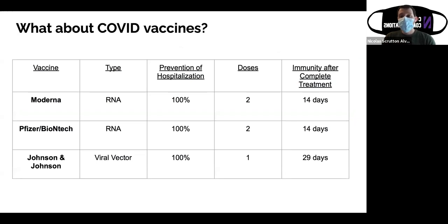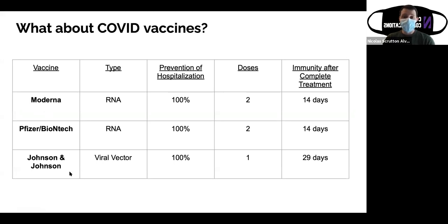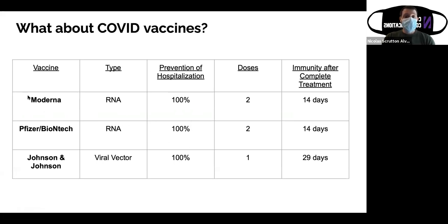At the moment, there are three COVID vaccines authorized in the US: the Moderna vaccine, the Pfizer-BioNTech vaccine, and the recently confirmed Johnson & Johnson vaccine. They all have a very high success rate in prevention, hospitalization, and severe coronavirus. In fact, all three vaccines have a 100% success rate in clinical trials for the prevention of hospitalization. The RNA vaccines — Moderna and Pfizer — require two doses to reach full immunity, whereas the Johnson & Johnson vaccine is a more traditional viral vector vaccine and only needs one dose.